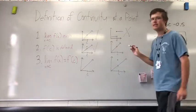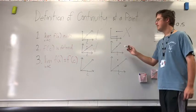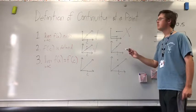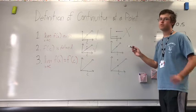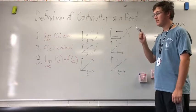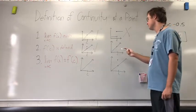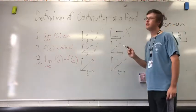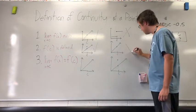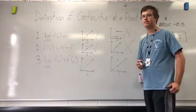When looking at this next graph, we see that there is no defined point when x equals c. Even though it does meet the first requirement — that there needs to be a limit at x equals c — because there is no defined point, it doesn't meet the second stipulation, so it's not continuous.